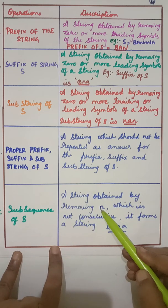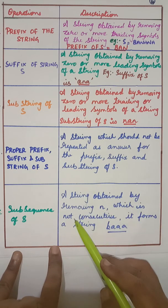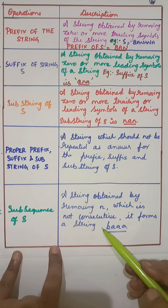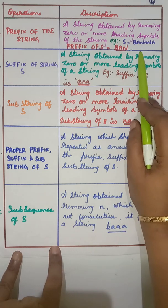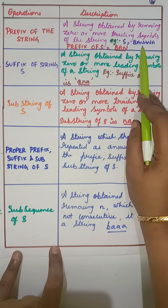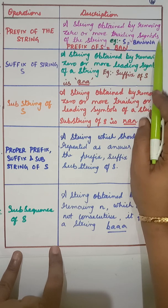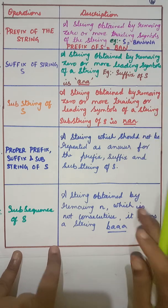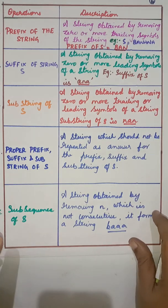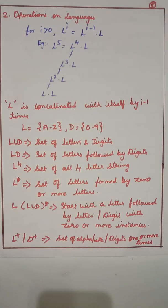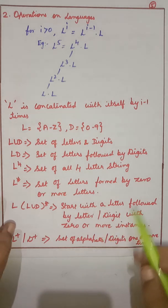Subsequence of s: a string obtained by removing non-consecutive items to form a string. For example, in 'banana', removing the non-consecutive character 'n' gives us 'baaa'. That covers the string operations and their descriptions.